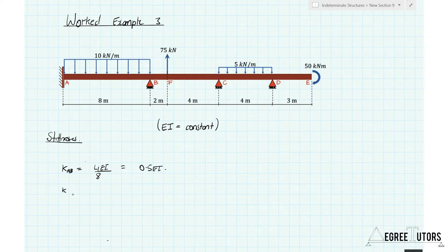KBC will be the same — it's going to be 4EI over the span, in this case 6 metres, and that's going to be 0.67EI.